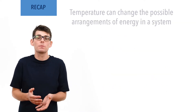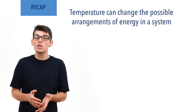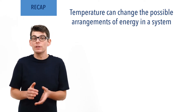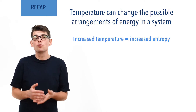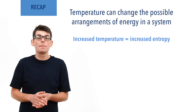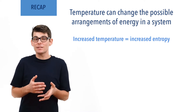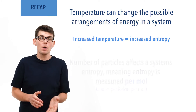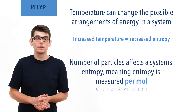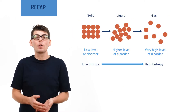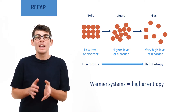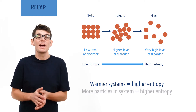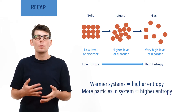Temperature changes the possible arrangements of particles within a system, meaning it changes the distribution of energy. Increased temperature means increased entropy. Entropy is a property a group of particles have, meaning it is measured based on the number of particles in a system, and as the standard unit for number of particles in chemistry is the mole, entropy is measured per mole of a substance. As a result, solids have lower entropies than liquids and liquids have lower entropies than gases. Warmer systems have higher entropies than colder systems, and systems with more particles in have a higher entropy than the same type of system with fewer particles in.